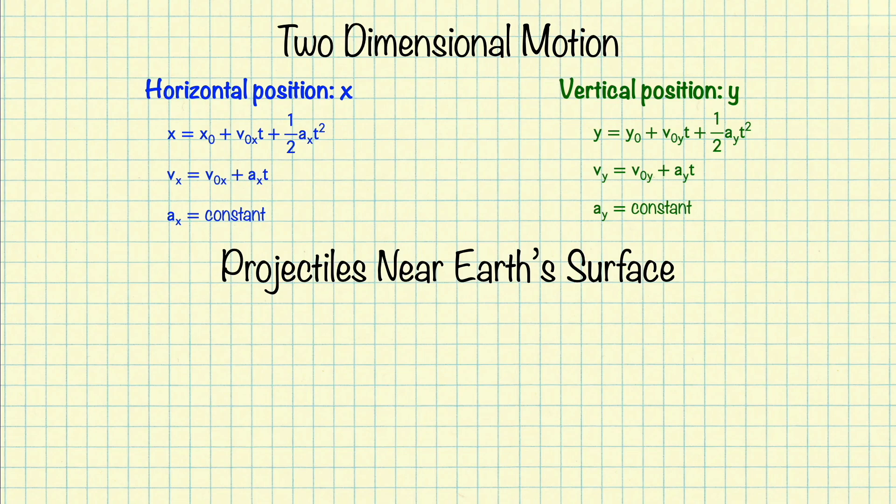So now that we're dealing with gravity near the surface of the Earth, the Y acceleration will be negative g, which is a constant, equal to negative 9.8 meters per second squared, and is the acceleration due to gravity, assuming that down is negative.